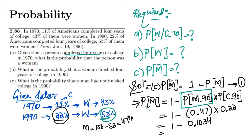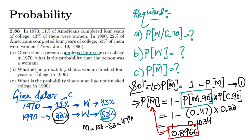Subtracting from 1 gives 1 − 0.1034 = 0.8966. That is the probability that a man would not finish his college degree in 1990. That is the solution of part C. In this question we solved all three parts of question 2.86. If you have any questions, ask in the comment box — see you soon.